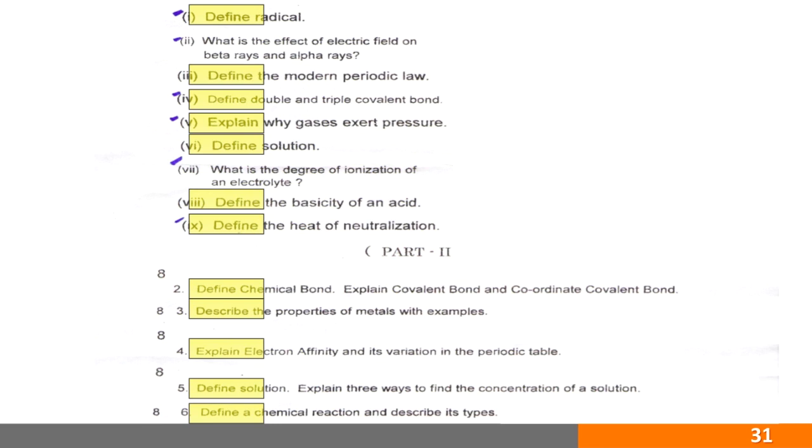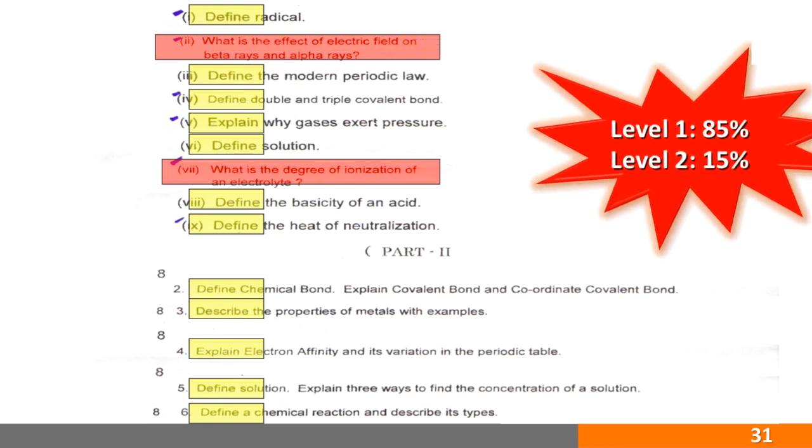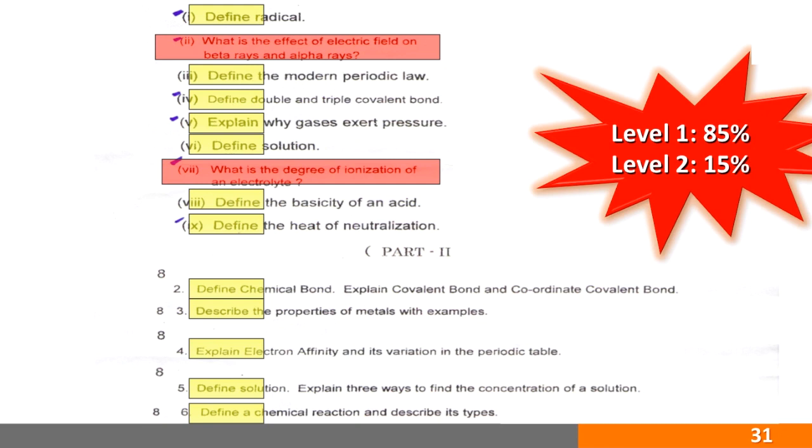Now if we compare these questions from the Bloom's taxonomy, we find out that 85% of the questions are from level 1, that is knowledge or information level, and 15% questions are from level 2 only, 2 questions as shown on the red slip.